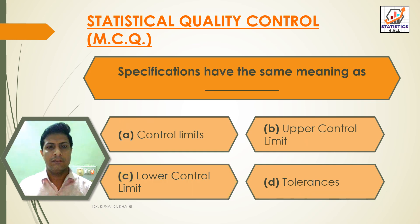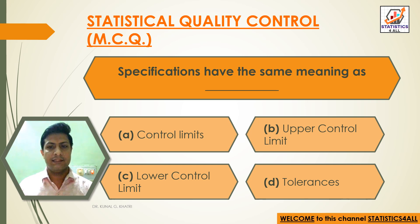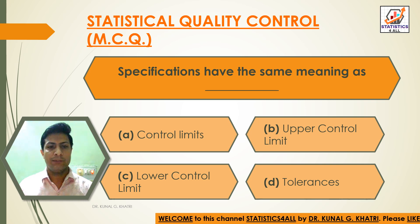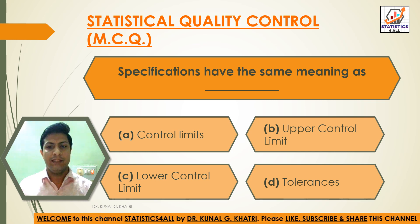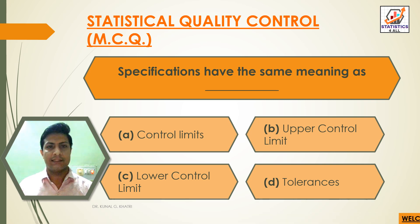Question 4: Specification limits have the same meaning as: Option A: Control limits, Option B: Upper control limit, Option C: Lower control limit, Option D: Tolerances. Answer: Option D — Tolerances. Specification limits have the same meaning as tolerances.